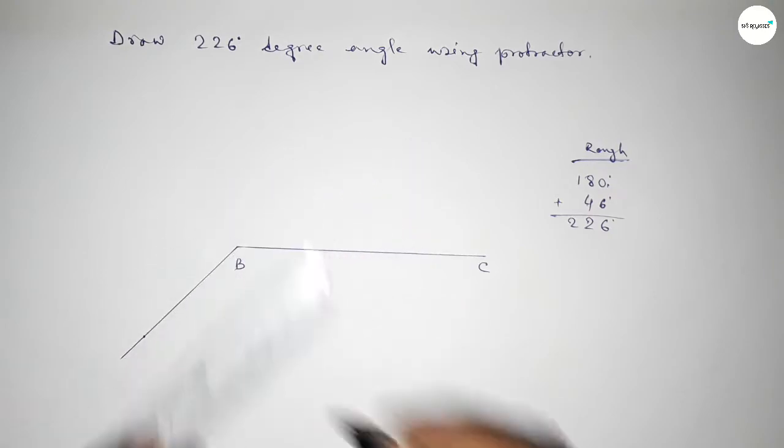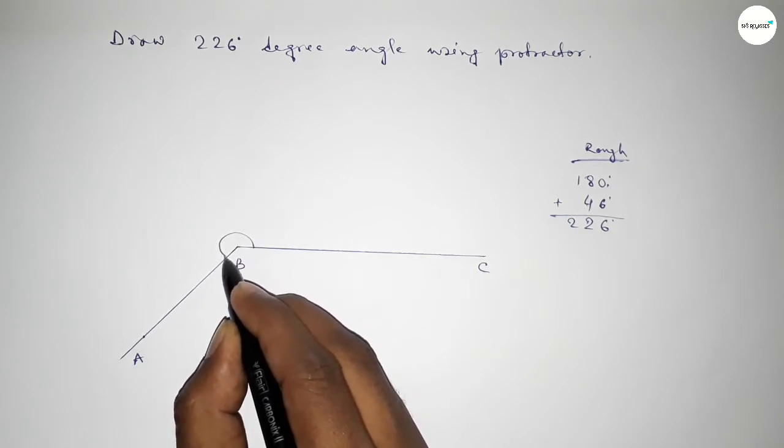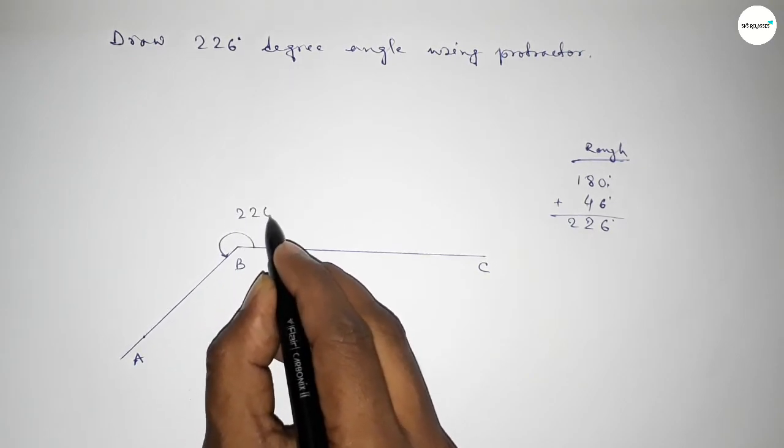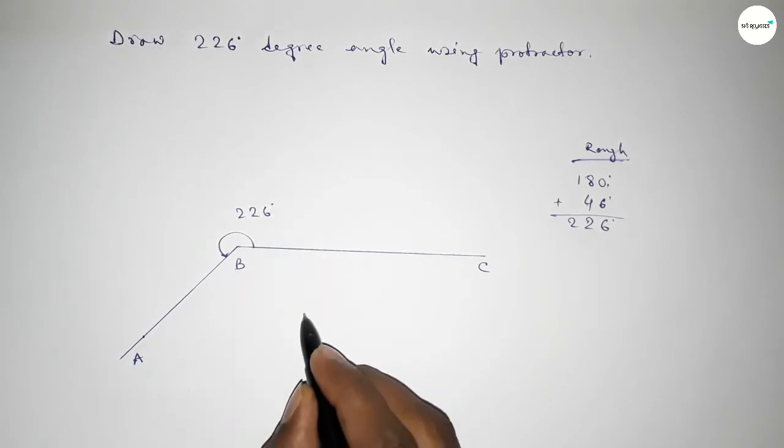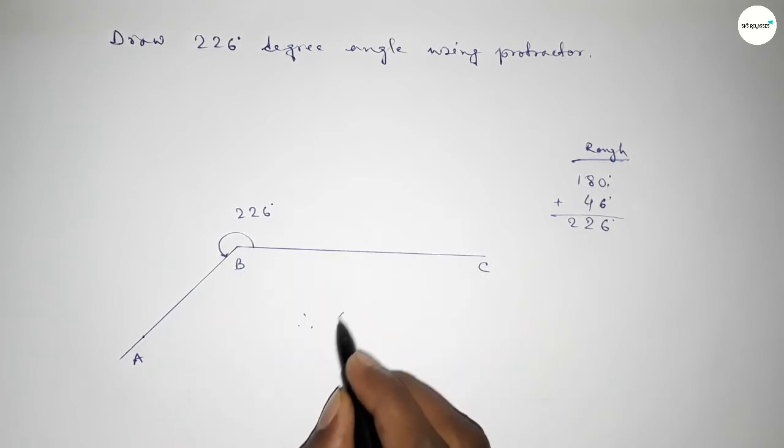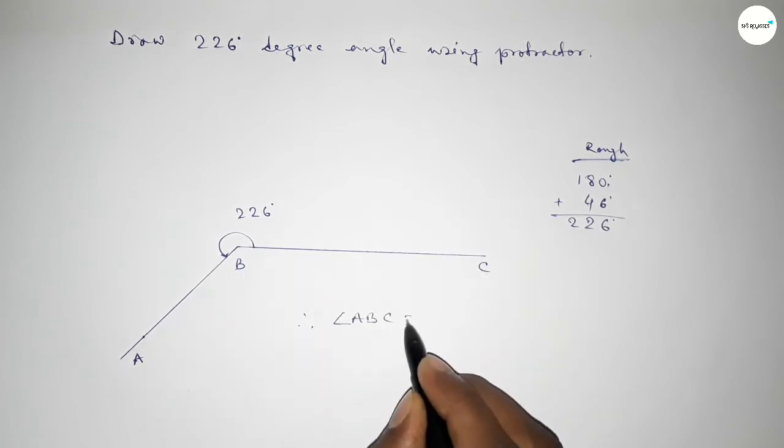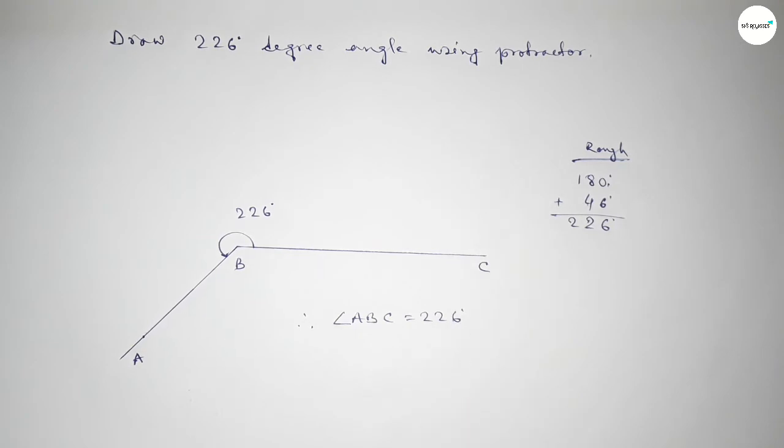Now joining the side, taking here point A. So angle ABC up to this is 226 degree angle. Therefore, angle ABC equal to 226 degree angle.